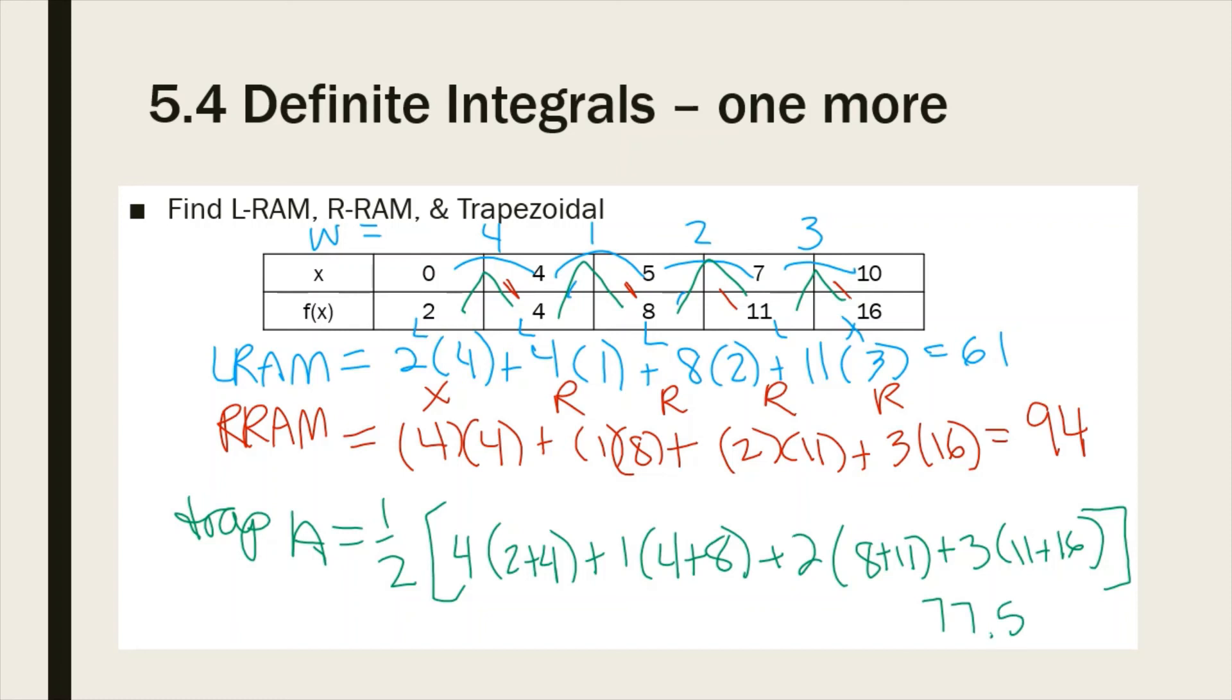And like I said, you're not going to have to do all three things. Most of the time, I'm just going to either ask you just for the left, or just for the right, or just for the trapezoidal. So you need to show me the work for the trapezoidal. Even though you know that it's an average of the left and the right, you still need to show me how to get it without finding the left and the right.